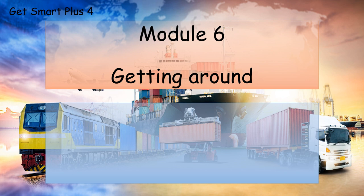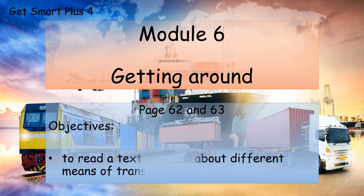Get Smart Class 4, Module 6: Getting Around, page 62 and 63. The objectives of this lesson are to read a text and talk about different means of transport.